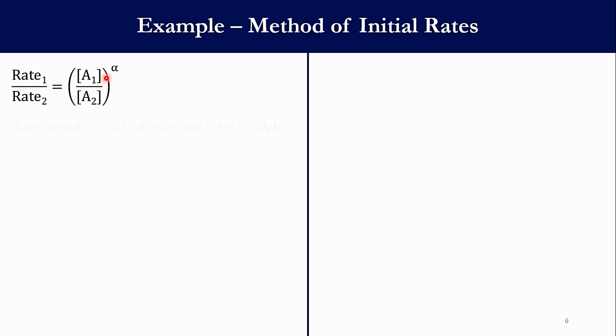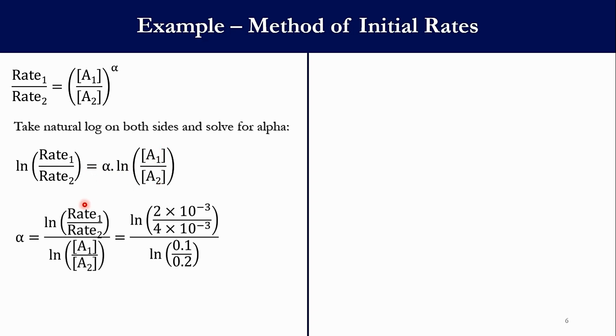Now if we take natural log on both sides and we have to solve it for α: ln(Rate₁/Rate₂) = α·ln([A₁]/[A₂]), or α = ln(Rate₁/Rate₂) / ln([A₁]/[A₂]). Now the value of Rate₁ is 2×10⁻³, Rate₂ is 4×10⁻³, [A₁] is 0.1 and [A₂] is 0.2. So accordingly we get α = 1. This system is first order with respect to species A.